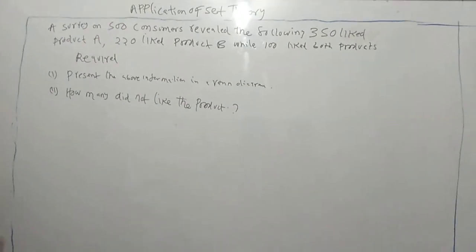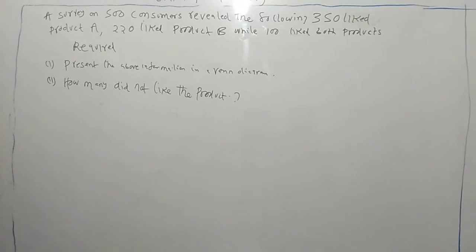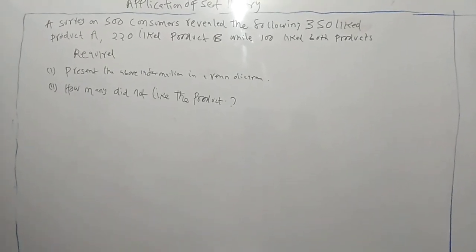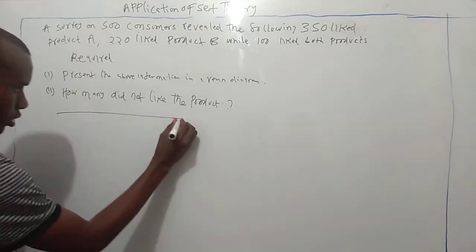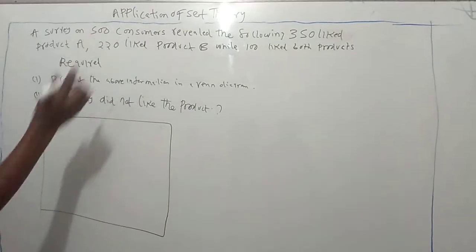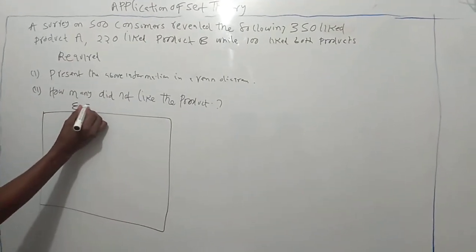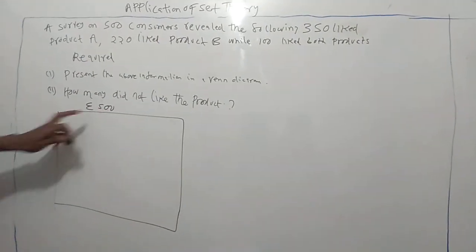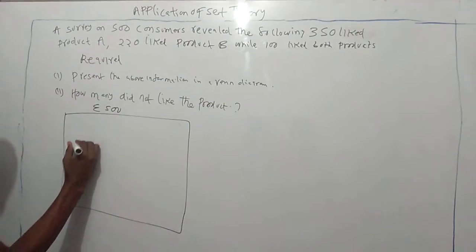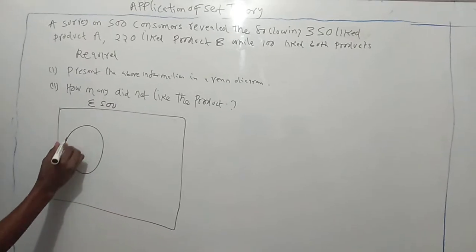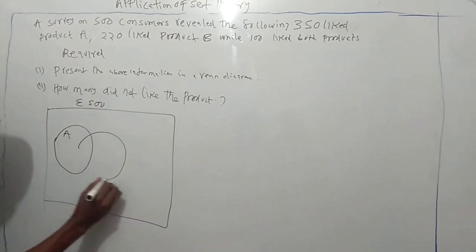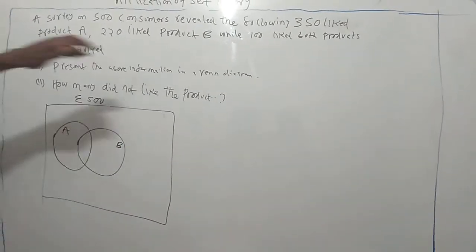For us to draw the Venn diagram, first of all, a Venn diagram consists of two parts, the major and the minor. We are told we have 500 consumers, so that means our total number is 500. It means we have two products, we have A and B. You can say here is product A, then we have here B.